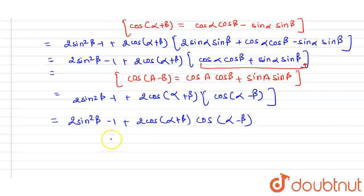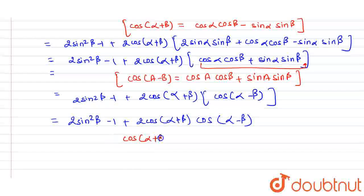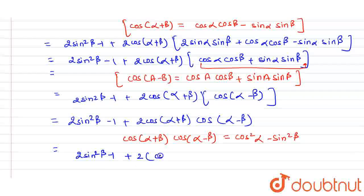We know the formula cos(α+β)cos(α-β) = cos²α - sin²β. Putting this value here, we get 2sin²β - 1 + 2(cos²α - sin²β).